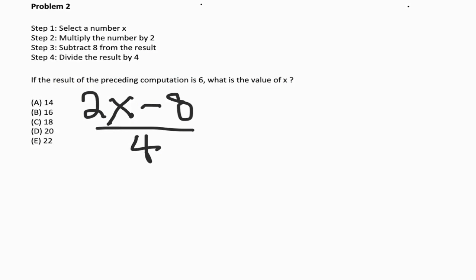If the result of the preceding computation is 6, what is the value of x? So now we have a pretty straightforward algebraic equation. We want to solve for x. So in order to do that, we have to isolate the variable. We can start by PEMDAS in reverse, right? The first thing that we'd want to do here is multiplication division. So in order to get that x alone, we're going to start by multiplying both sides by 4 to undo what's there.